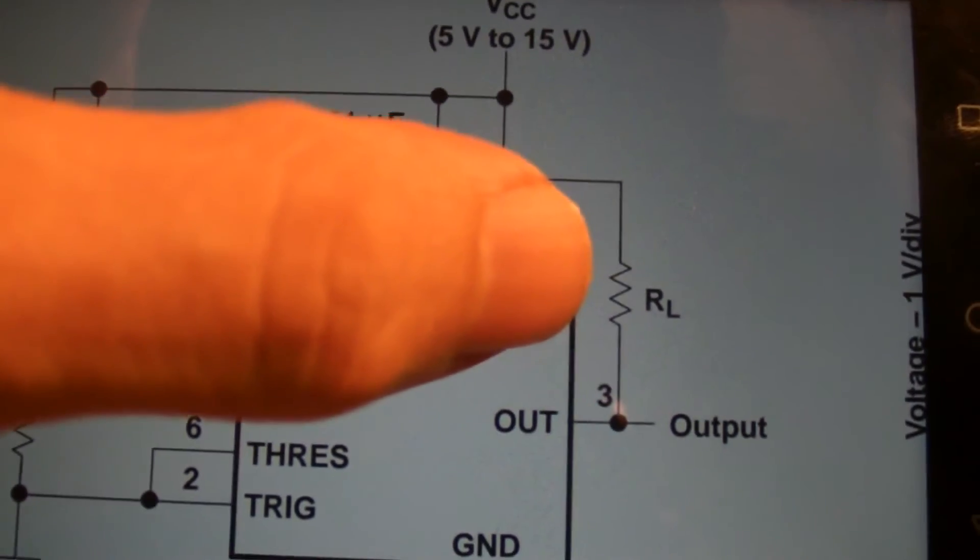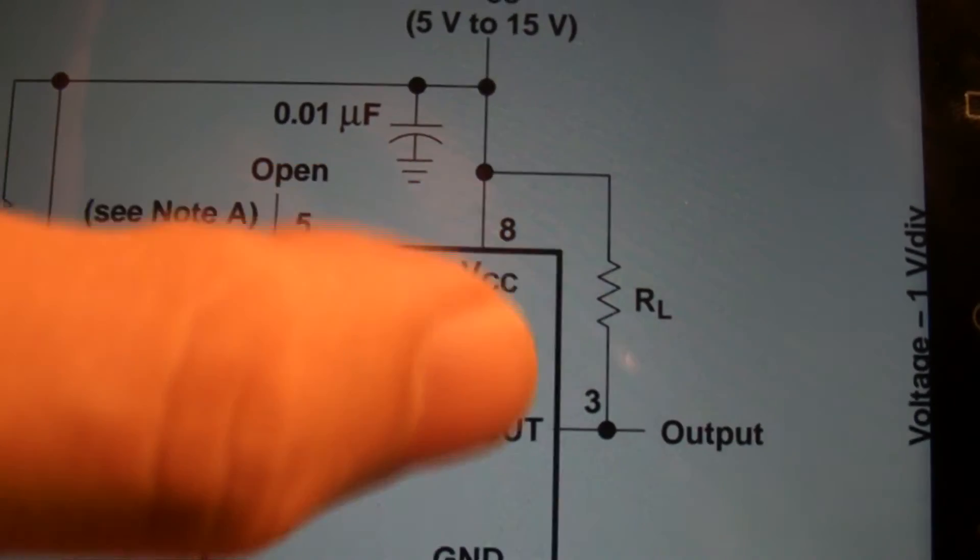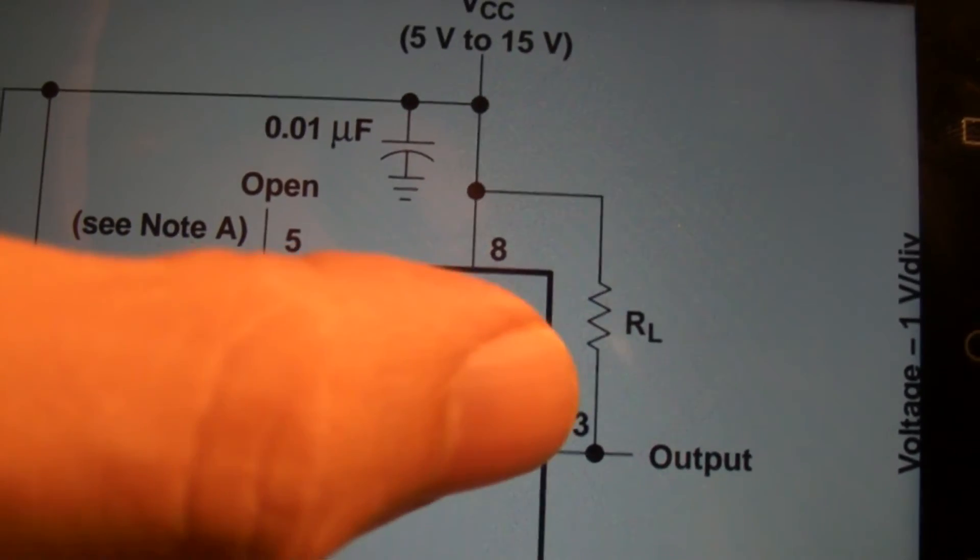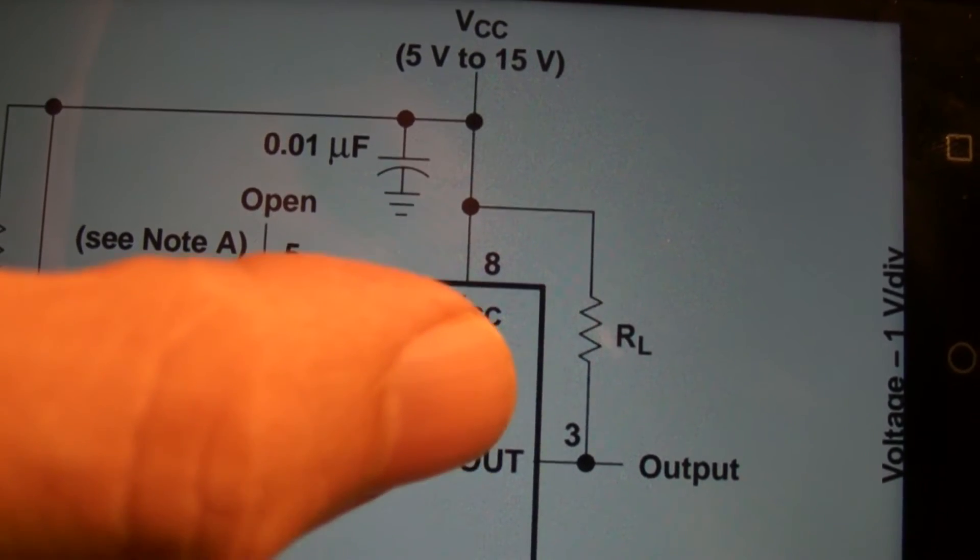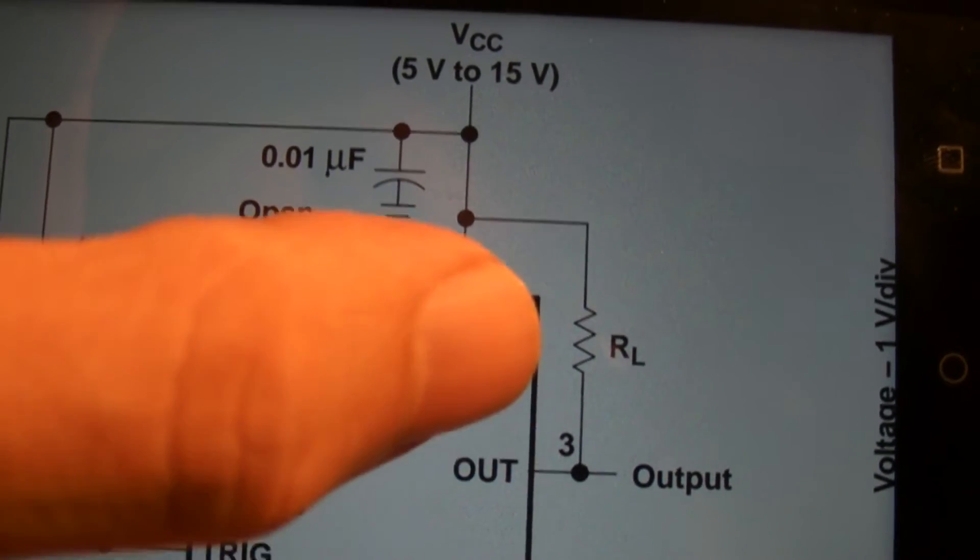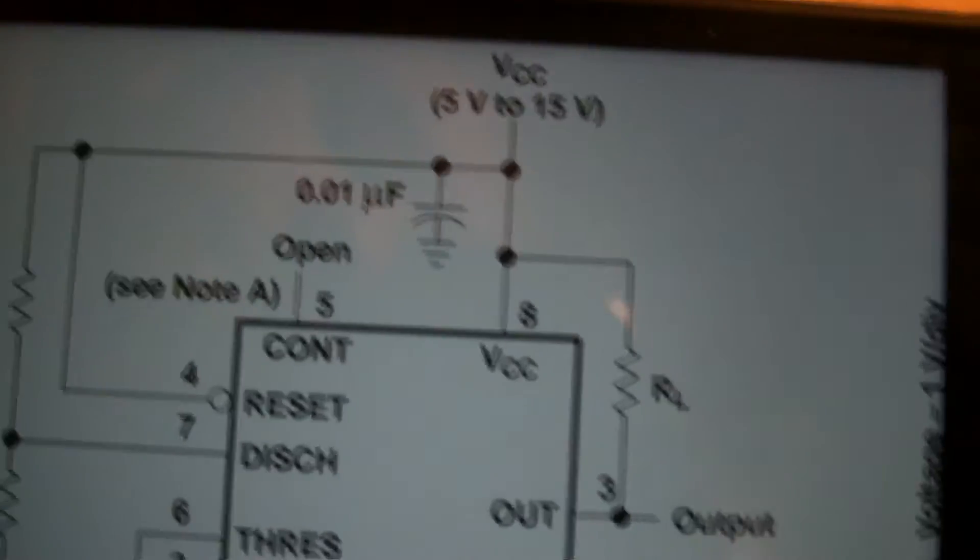Here we have the actual load. So we're going to use an LED with a current limiting resistor and we're going to take the output of the device. We're going to take the output of the NE555 and we're going to take that to VCC in order to power the load.